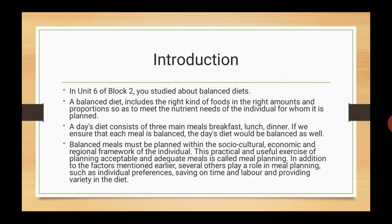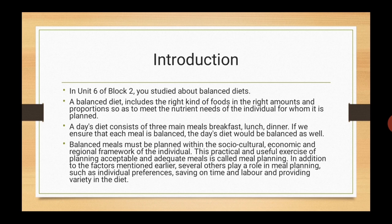In the previous unit, we studied about balanced diets. A balanced diet includes the right kind of foods in the right amounts and proportions so as to meet the nutrient needs of the individual for whom it is planned. A day's diet consists of 3 main meals: breakfast, lunch and dinner. If we ensure that each meal is balanced, the day's diet would be balanced as well. You need to emphasize on few factors while planning a balanced diet — socio-cultural, economic and regional framework of an individual. This practical and useful exercise of planning acceptable and adequate meals is called meal planning. Apart from these factors, we will learn about more factors such as individual preferences, saving on time and labor, and providing variety in the diet.